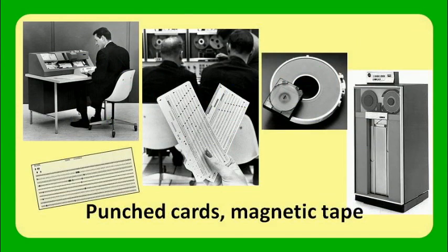Each column of punchings on the 80-column card would represent a different character or number. On the right, you see a tape drive. The larger reel pictured is about 10 inches in diameter and holds about 2,000 feet of tape. It's mounted as one of the reels on a drive, as you see in the lower right corner, and that drive might be about the size of a refrigerator. So these were not small pieces of equipment.